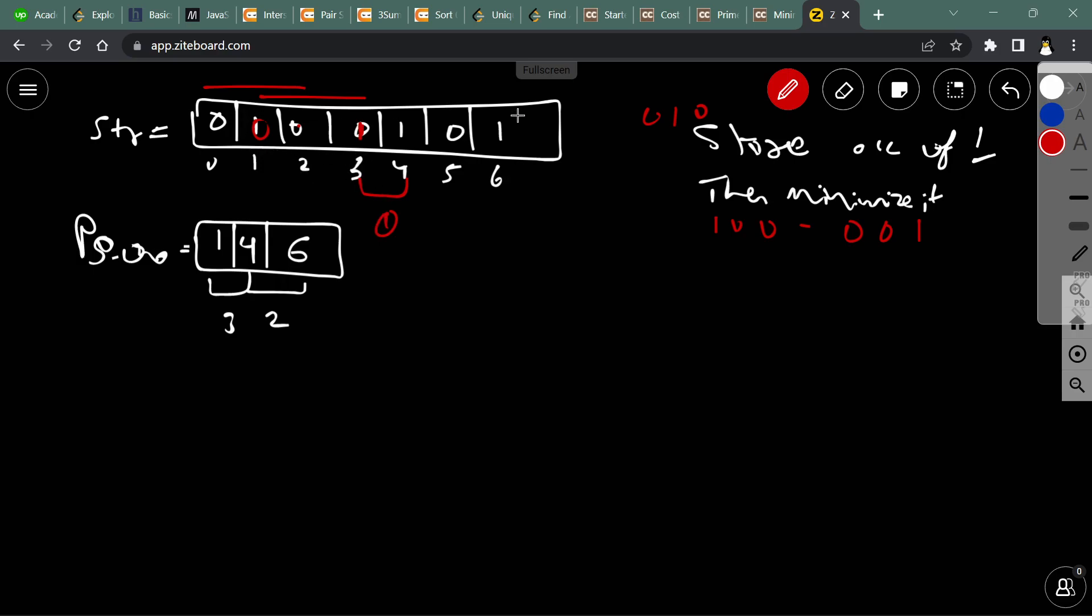In this case, distance will minimize to 1, but we can't do it for our whole array.